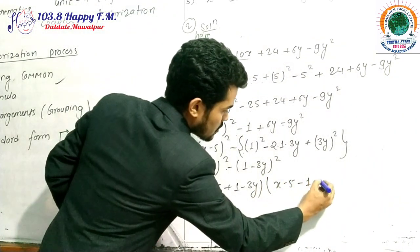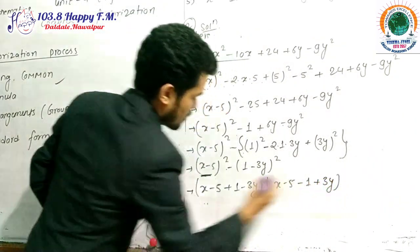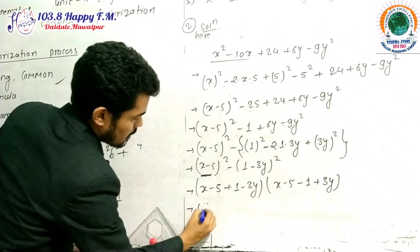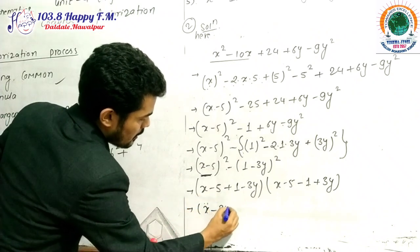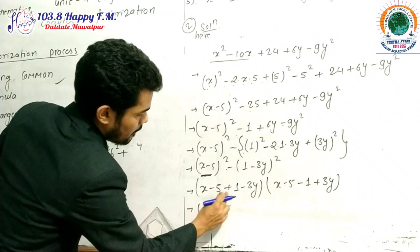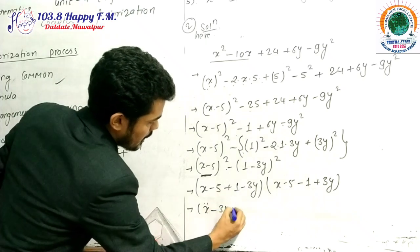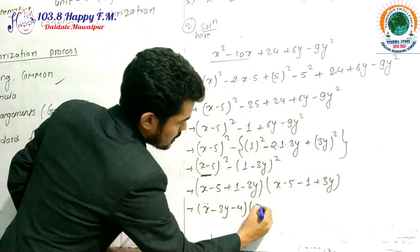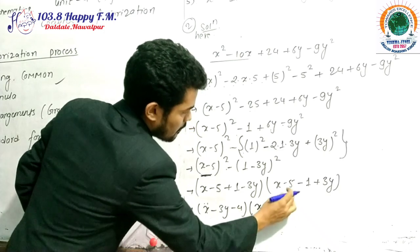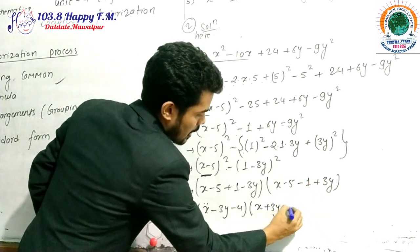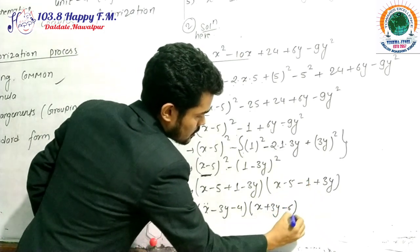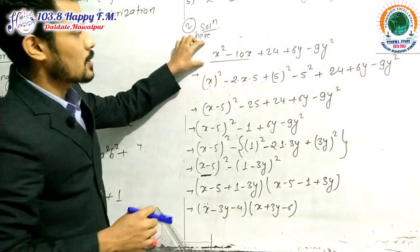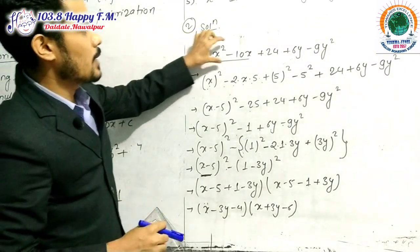Applying the formula A² − B² = (A + B)(A − B), we get [(x − 5) + (1 − 3y)][(x − 5) − (1 − 3y)]. Arranging the like terms: (x − 3y − 4)(x + 3y − 6). This is how we do the factorization of this kind of expression containing two different variables.